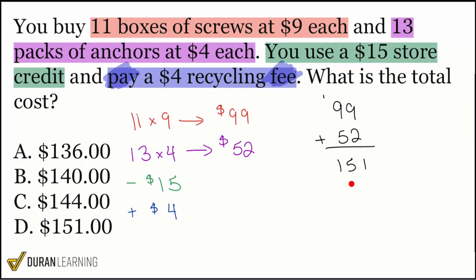Another way that you can think about this is you can add the four first, and then you'll have 155, and then you can subtract the 15. You can do it in that order as well, because that'll still give you the same correct final answer, 140.